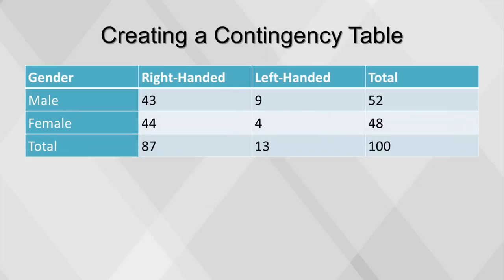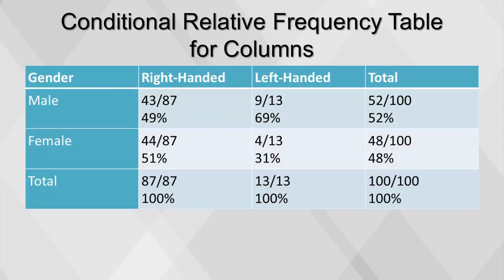But what if we want to know what percent of left-handed people are female? This is a different type of question, one that can be answered by dividing the original values of the cells by the totals along the dominant hand or horizontal axis of the contingency table. These are called column relative frequencies.